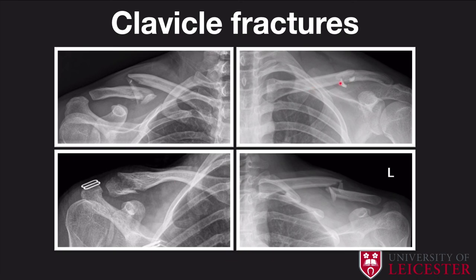A few other examples of clavicular fractures demonstrate the importance of two views — in one view it may look acceptable, but the second view reveals how much displacement there is. Look for tiny fracture fragments; if they unite in an odd position, they can cause continuous pain or form a palpable hard lump from callus formation. These small fracture fragments should be commented on and operated on if possible.